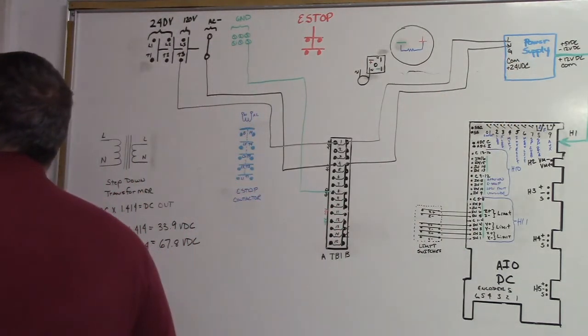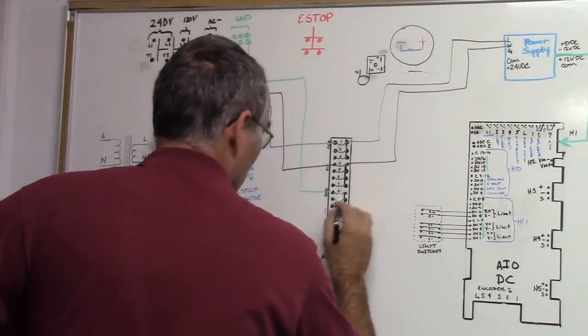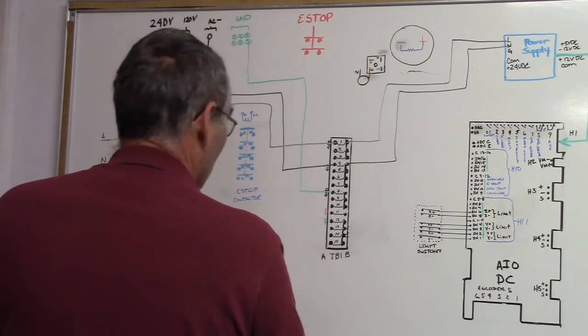And they call for ground to go to TB1-8B, so let's use the green one for the ground because that's what it is.